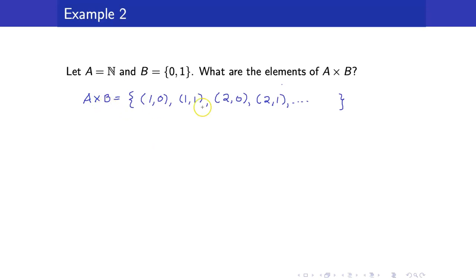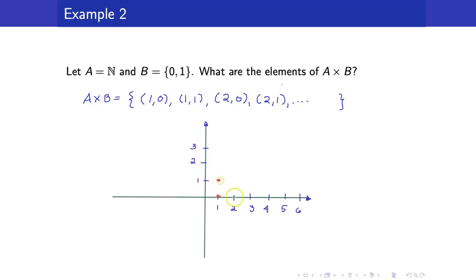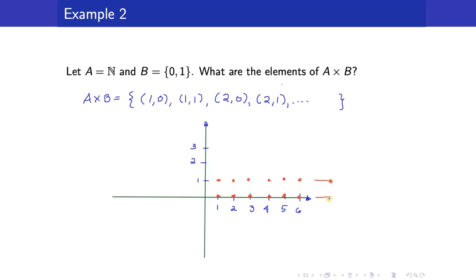The graph of A cross B would show points (1,0), (1,1), (2,0), (2,1), and so on, continuing indefinitely.